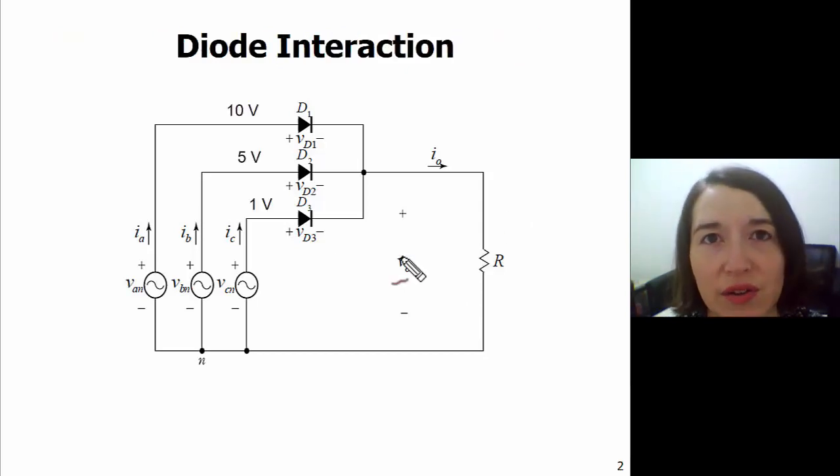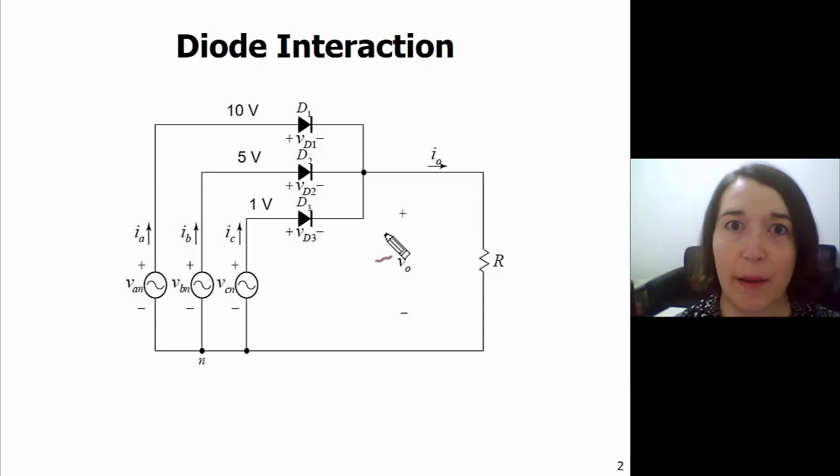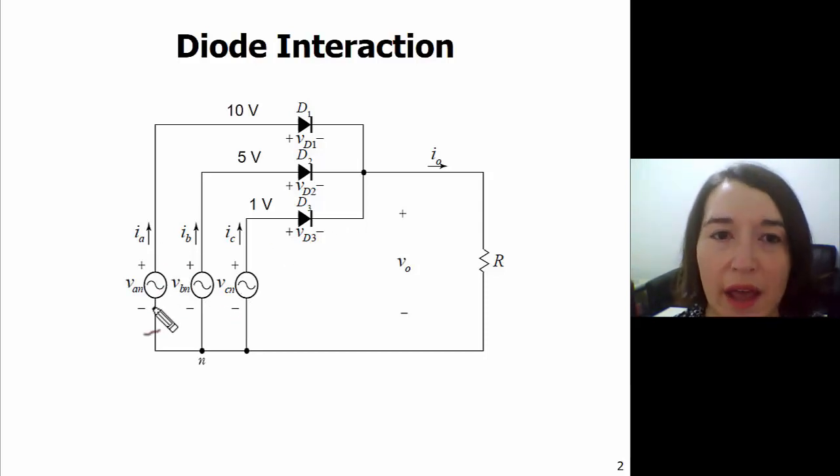First we need to understand how the diodes interact in this combination. So we're going to start with an example. Let's say we have three different voltages here. A is 10, B is 5 volts, and C is 1 volt. And we have these three diodes and we have to figure out which voltage is on the output.